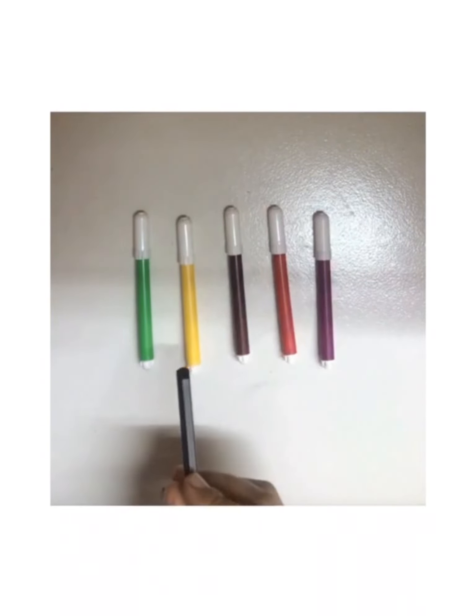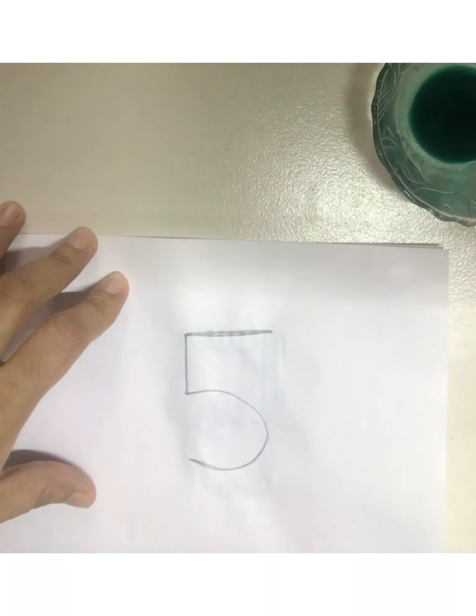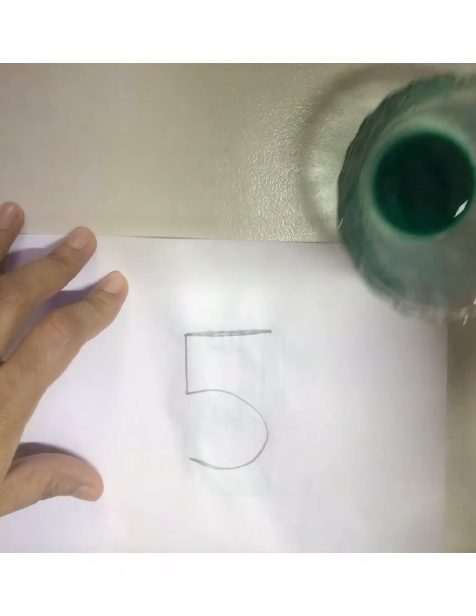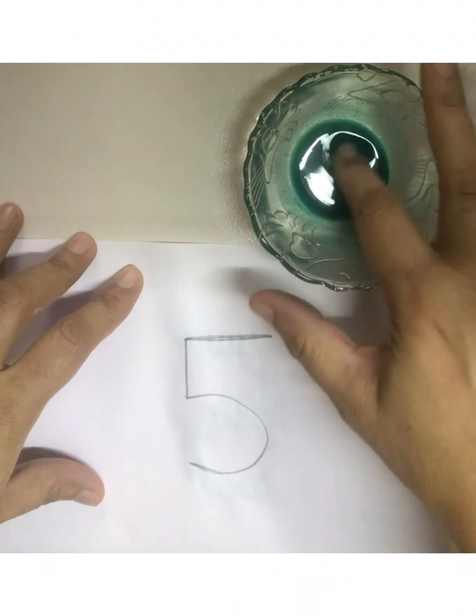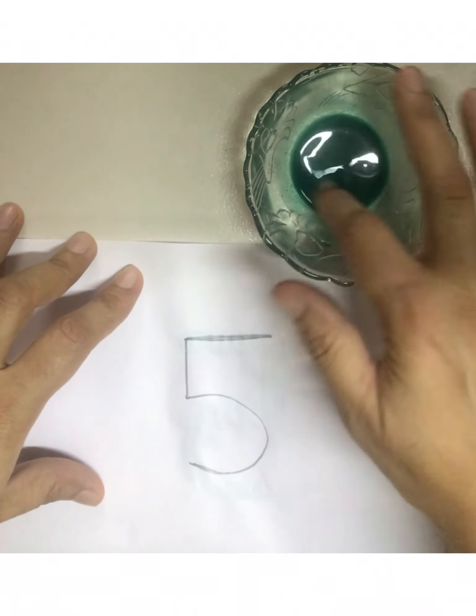There are five colors. Kids, now we will do tracing on number five. Take any color and dip your finger, pointer finger in it.